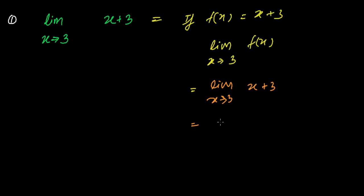Just plug the value of 3 and it's going to be 3 plus 3, which is 6. So our answer is 6. The limiting value of the function f(x) when x tends to 3 is 6.